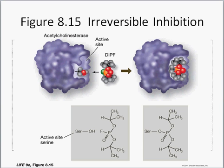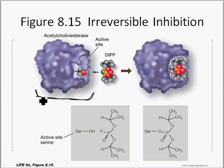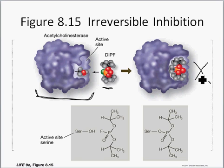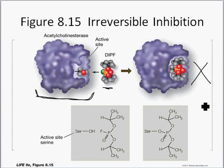Irreversible inhibition is permanent. Here's an enzyme involved in nervous system function. A substrate called DIPF binds to the active site and locks in place, blocking it so the enzyme can no longer function. This is bad — DIPF is considered a nerve gas because it shuts down the nervous system and has toxic effects on the human body. This is irreversible inhibition because the substrate literally binds and locks onto the enzyme permanently.